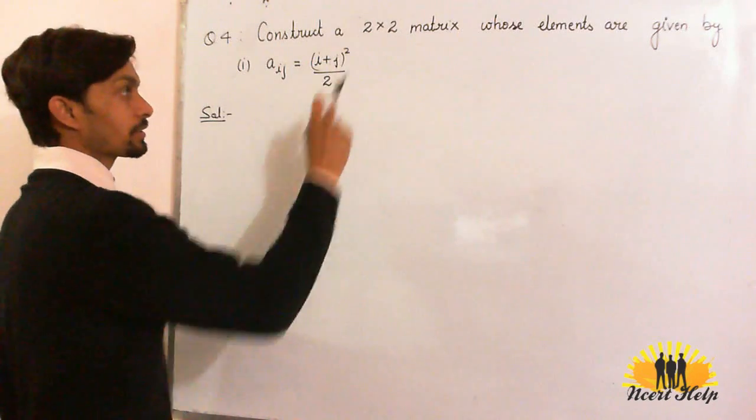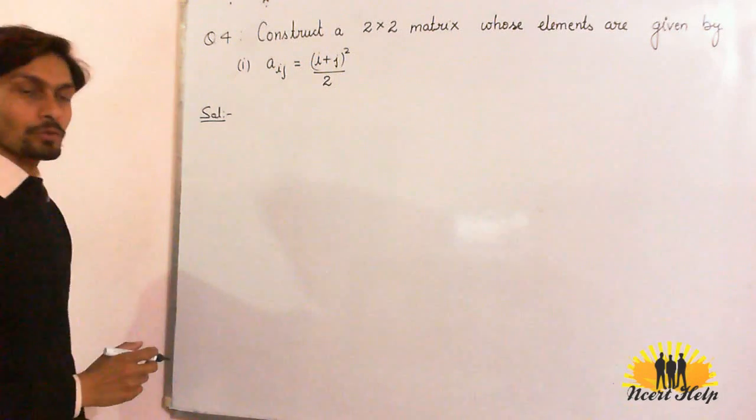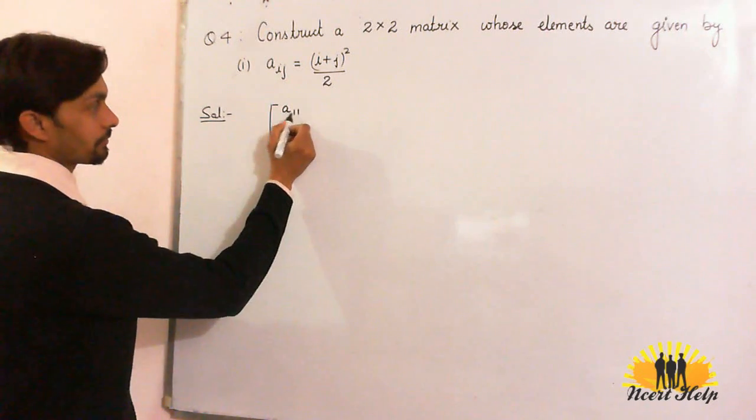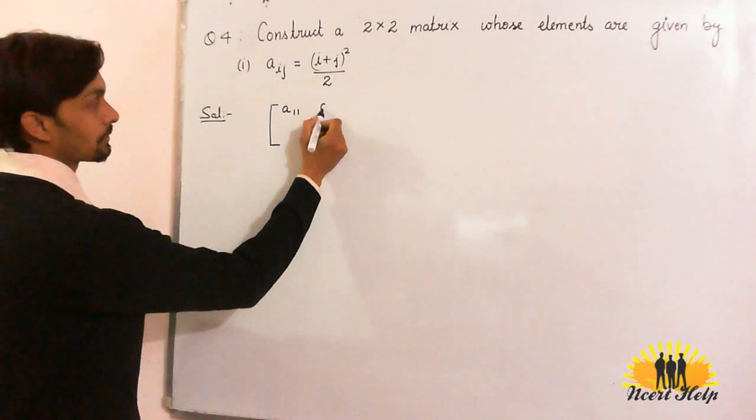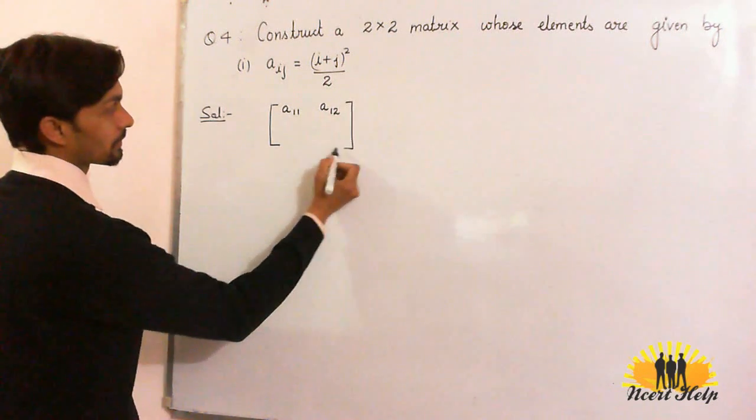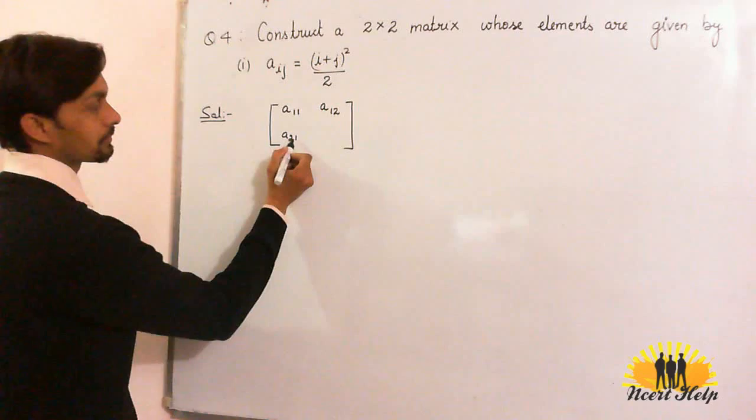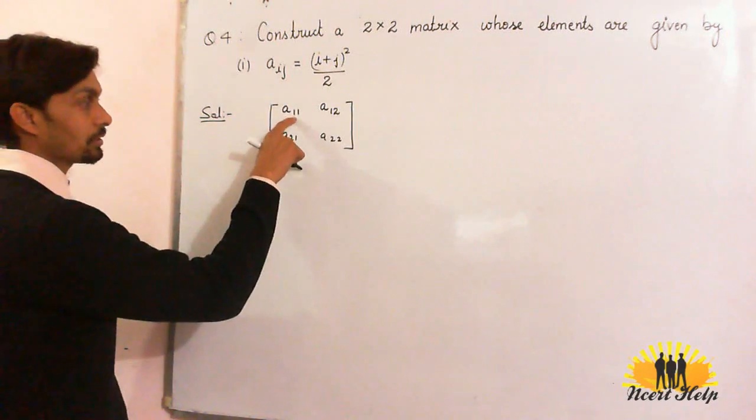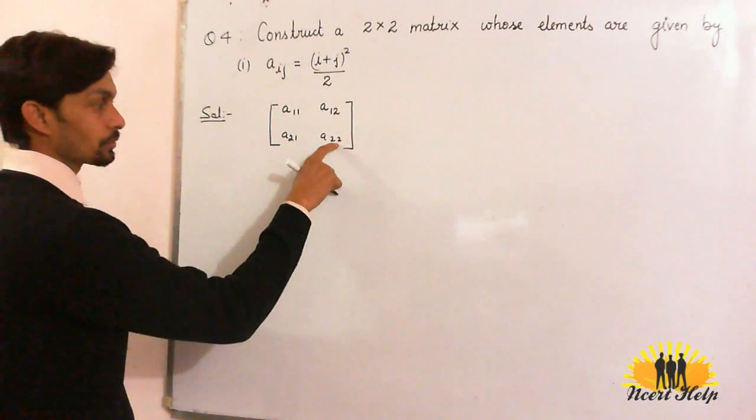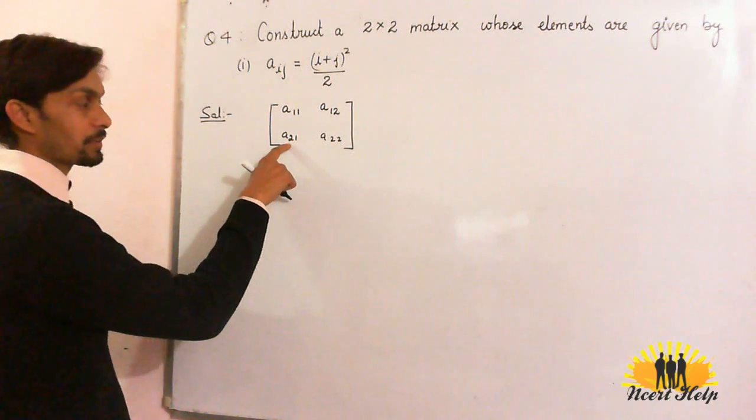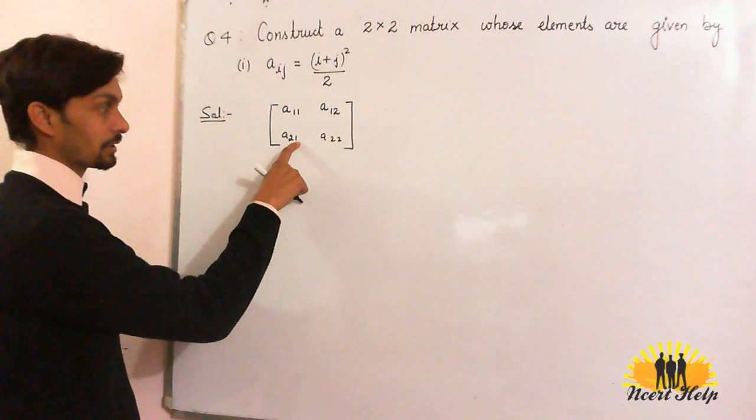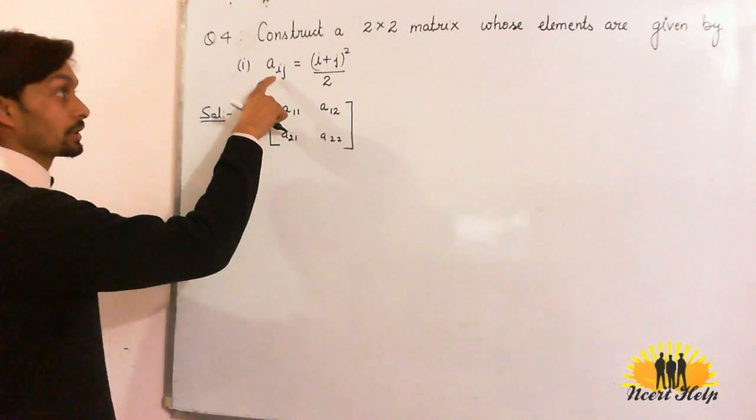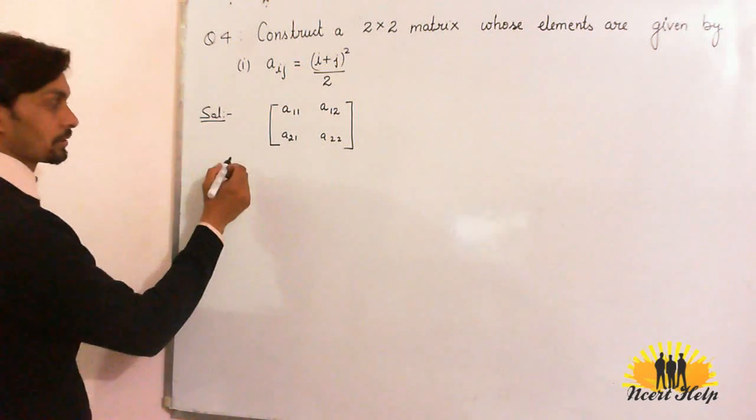If the order of matrix is 2×2, there are 4 elements and the position of elements will be A11 (first row first column), A12 (first row second element), A21, and A22 (2 rows and 2 columns). Position 11, 12, 21, 22 where the first number represents i and the second number represents j. i is the number of rows and j is the number of columns.